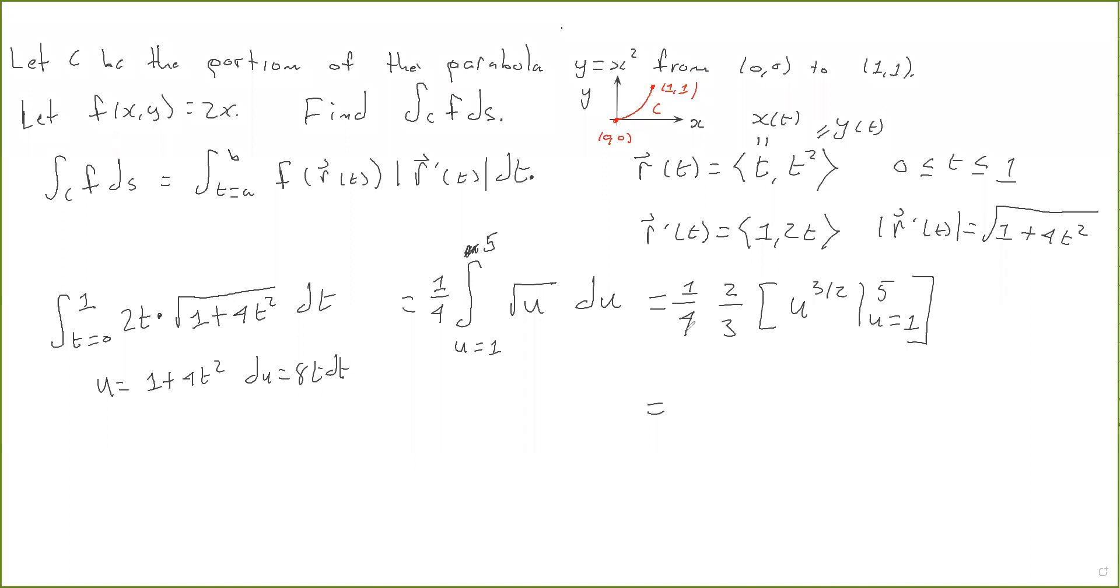The 2 over the 4, that's 1 half. So this part is 1 sixth. Okay, and now u to the 3 halves... 5 to the 3 halves. That's going to be the square root of 125 because 5 cubed is 125. Then we take the square root minus 1 to the 3 halves, which is 1.